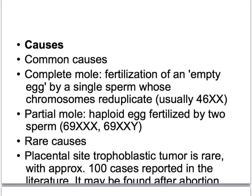In review, hydatidiform mole and gestational trophoblastic disease most often arises from a molar pregnancy: the complete mole being fertilization of an empty egg by a single sperm whose chromosomes reduplicate, a partial mole where a haploid egg is fertilized by two sperm, and rare causes including placental site trophoblastic tumor — a very rare condition with only about 100 cases reported in the literature.